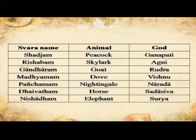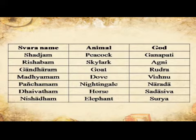Each Shuddha Swara is traditionally held to have originated in the sound of a different animal, and each swara is associated with one of the seven chakras of the body and attributes to a particular deity. Swara — Animal — God: Shajjam — Peacock — Ganapati. Rishabham — Skylark — Agni. Gandharam — Goat — Rudra. Madhyamam — Dove — Vishnu. Panchamam — Nightingale — Naradha. Daivatam — Horse — Sadashiva. Nishadam — Elephant — Surya.